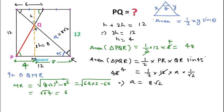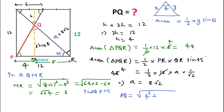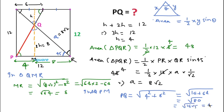In triangle QPM, this is also a right-angle triangle. Using the Pythagorean theorem, PQ equals the square root of PM squared plus QM squared, that is the square root of 4 squared plus 8 squared, which equals the square root of 16 plus 64, equals the square root of 80, which equals 4 root 5. So 4 root 5 units is the required answer for this question.